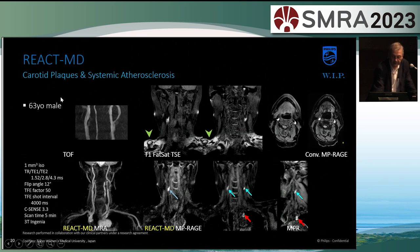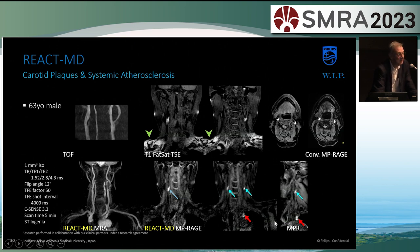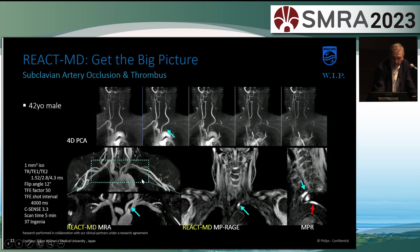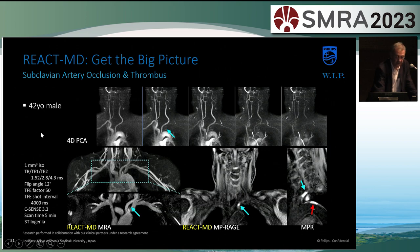A few clinical examples. Carotid plaque here — you see a rather extended field of view, from the circle of Willis to the aortic arch. You see the MRA, and then with the MPRH you can see the plaque and detect it easily. This may indicate the IPH volume of the plaque. Another example: an occlusion of the subclavian artery. In MPRH you see the occlusion and the plaque. In the MRA, you see no flow — it is completely occluded. And again, a pretty big field of view that you can acquire with this technique.